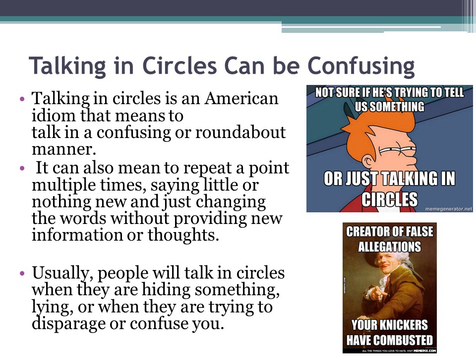One of the biggest issues we see is the inability to speak clearly. In the United States, we call this talking in circles — talking in a confusing or roundabout manner. It can also mean repeating a point multiple times, saying little or nothing new and just changing the words without providing new information or thoughts. Usually people talk in circles when they are hiding something, lying, or when they are trying to disparage or confuse you, or when they have no idea what they are talking about.